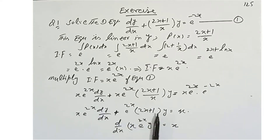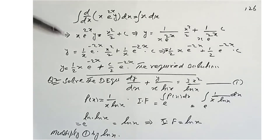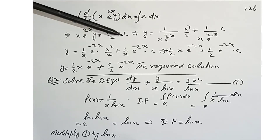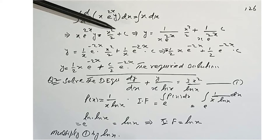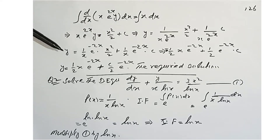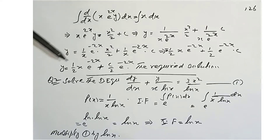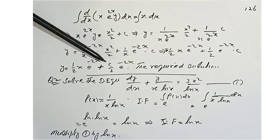The left-hand side becomes the derivative of x·e^x · y. We integrate both sides; the derivative and integral cancel, giving x·e^x · y = x²/2 + constant. Dividing through by x·e^x, we get y = (1/2x)·e^(-2x) + (c/x)·e^(-2x).